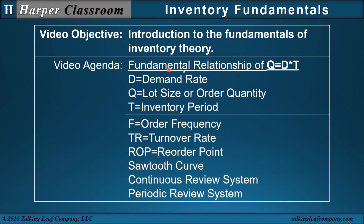The agenda: I'll start with the fundamental relationship of inventory theory, Q equals DT, where D is the constant demand rate, Q is the lot size or order quantity, and T is the inventory period or time between orders. This video will also include the order frequency, the turnover rate, and the reorder point. All of this will be represented conceptually in the sawtooth curve, and then reported in two review systems: the continuous review system and the periodic review system.